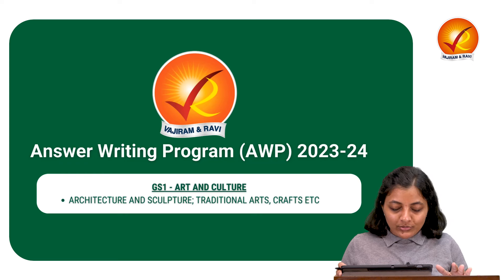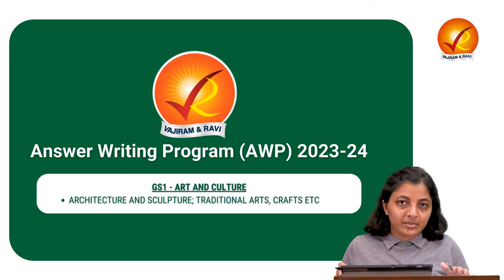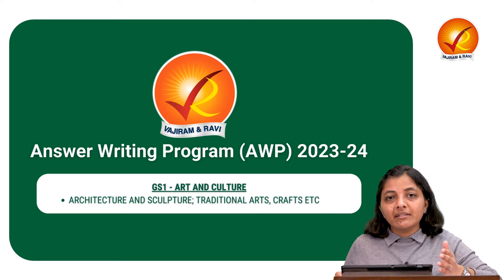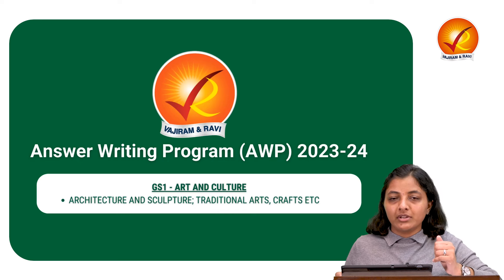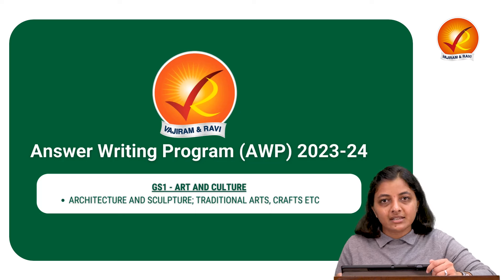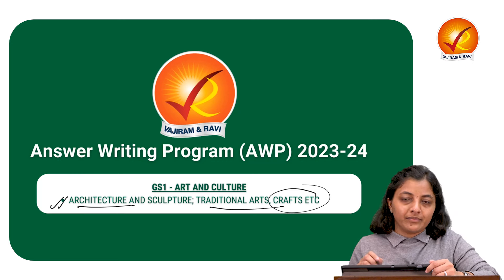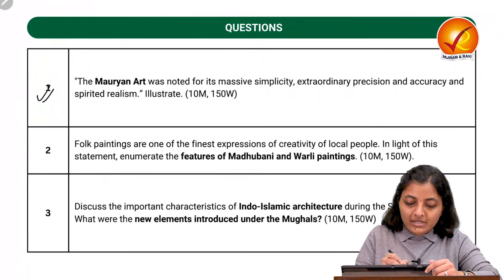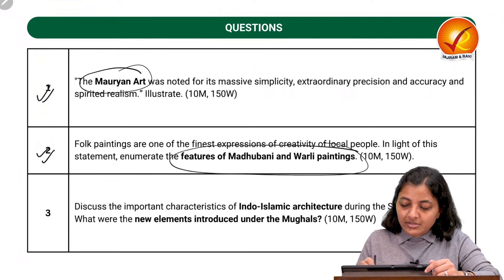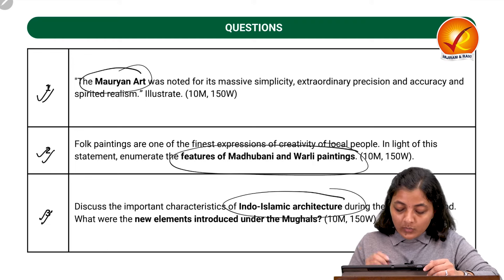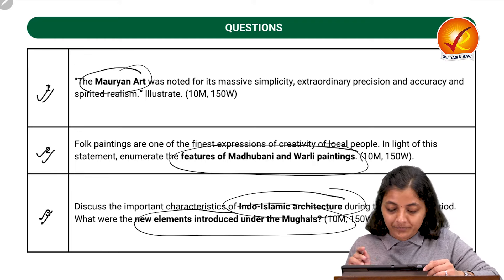Welcome students to the answer writing program. Today is the first of March, and in March we will be dealing with the GS1 syllabus — art and culture, modern India, and geography aspects. We will not be touching world history, post-independence, or society. Today's topic is architecture, sculpture, and traditional arts and crafts. The three questions cover Mauryan art, features of Madhubani and Warli paintings, and Indo-Islamic architecture under the Mughals.